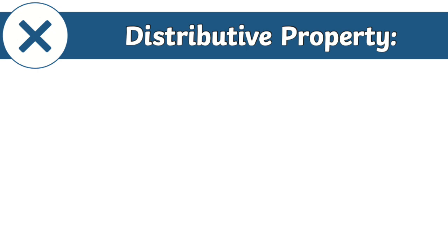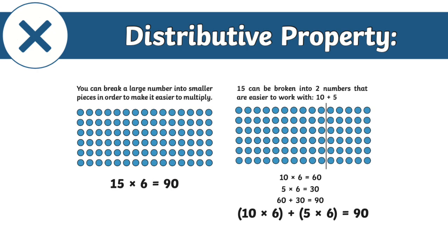Distributive: you can break a large number into smaller pieces in order to make it easier to multiply. When a number is multiplied by the sum of two numbers, the answer is the same as multiplying each number in the sum by the original number and then adding the products together.